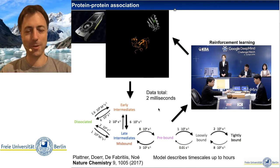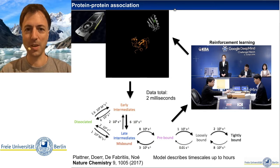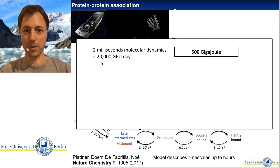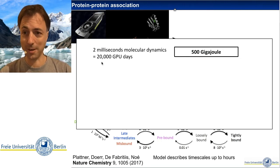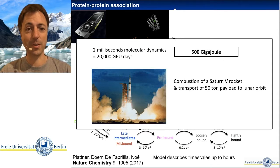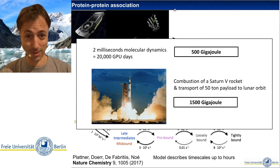But despite the fact that we are about 10,000 times more efficient than direct MD, this is still obscenely expensive. To see that, consider that for two milliseconds of all-atom MD in this system we needed about 20,000 GPU days, or in other words 500 GJ. To see how much that is, compare that to the energy it takes to burn a Saturn V rocket and move a 50-ton payload to lunar orbit, which is about 1500 GJ.